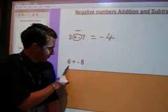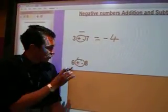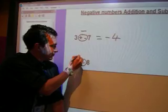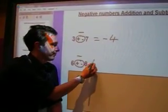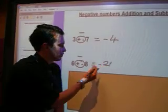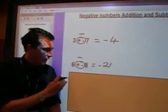Have a look at this one. We've got a positive and a negative together again. It doesn't matter which way round they are. It becomes a minus. 6 take away 8. It becomes minus 2, because we're going smaller from 6. We're going down the number line.